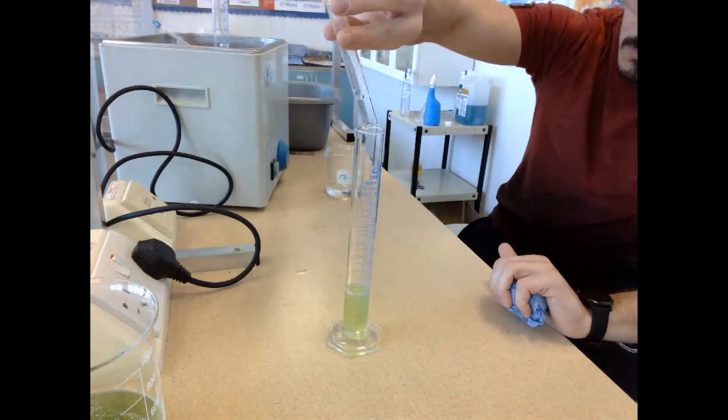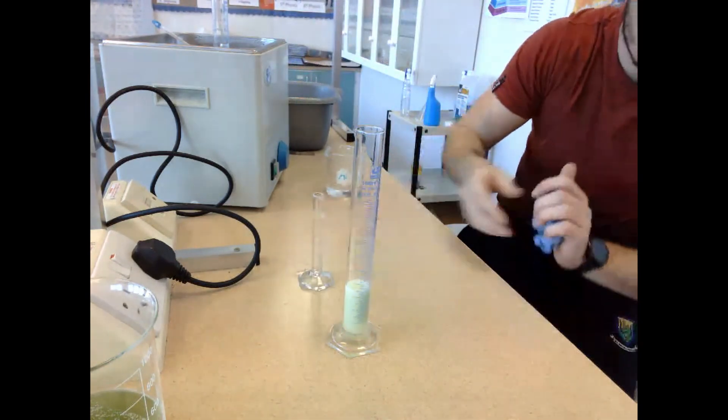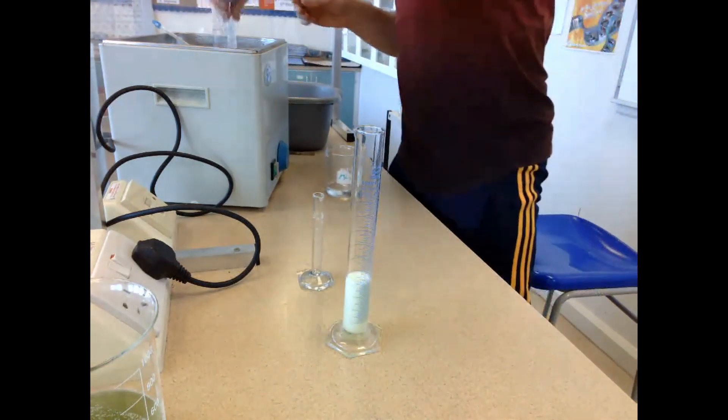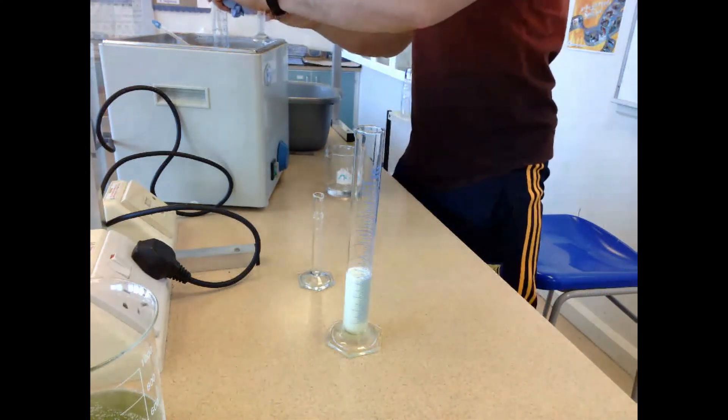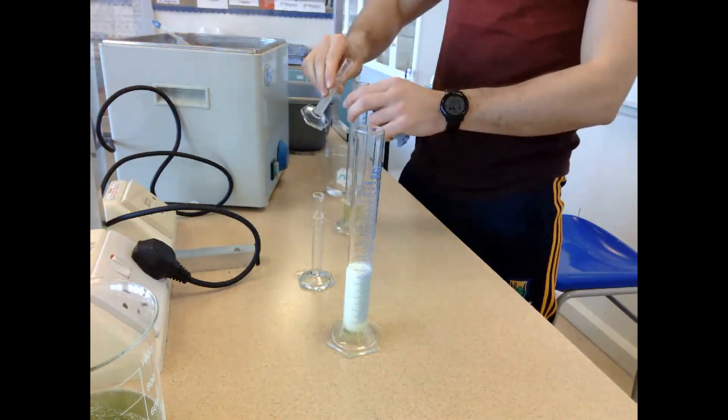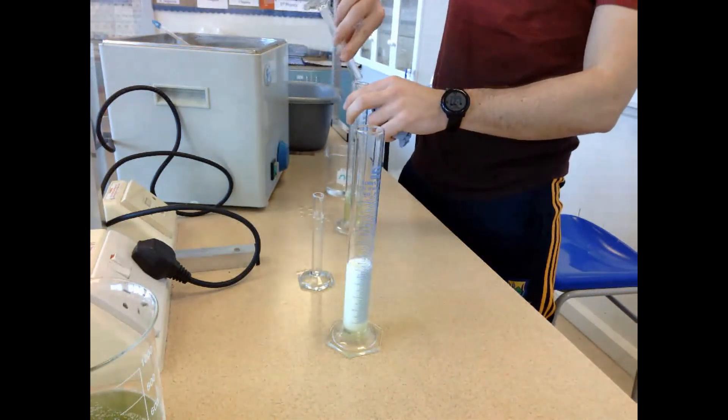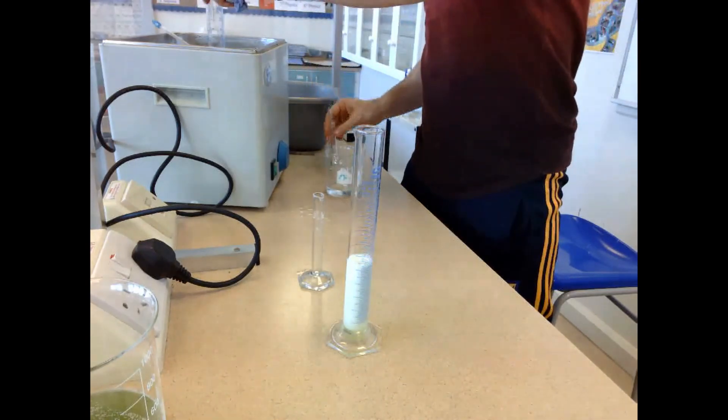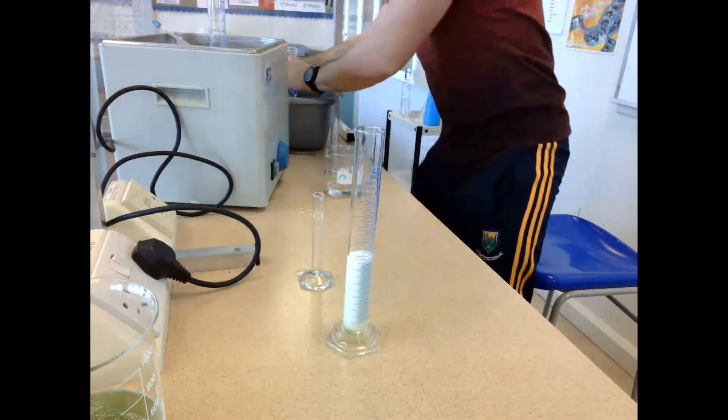I started with the room temperature cylinder. Immediately upon adding hydrogen peroxide, a massive amount of foam was produced very rapidly. Then I added hydrogen peroxide to the hot water bath cylinder and returned it to the bath to maintain temperature, followed by the ice bath cylinder.